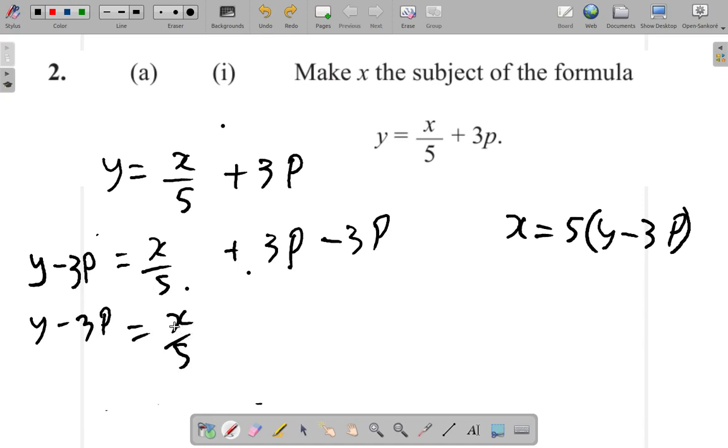Now, the thing is, I want to get rid of the 5. I don't want x over 5 equals. I want x equal. The question says make x the subject of the formula. It did not say make x over 5 the subject. It says make x the subject. So I want x equal.